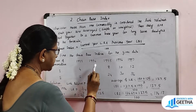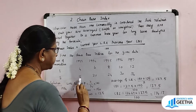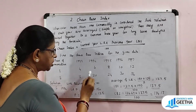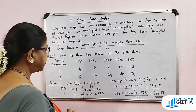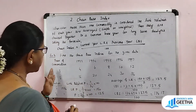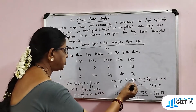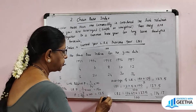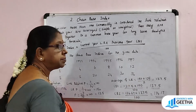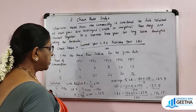For the next year, 20 by 16 into 100 gives the link relative for commodity two. When there are more than two commodities, we take the average of the link relatives — the simple average. So 150 plus 125 divided by 2 gives 137.5. The average of the link relatives is 137.5.